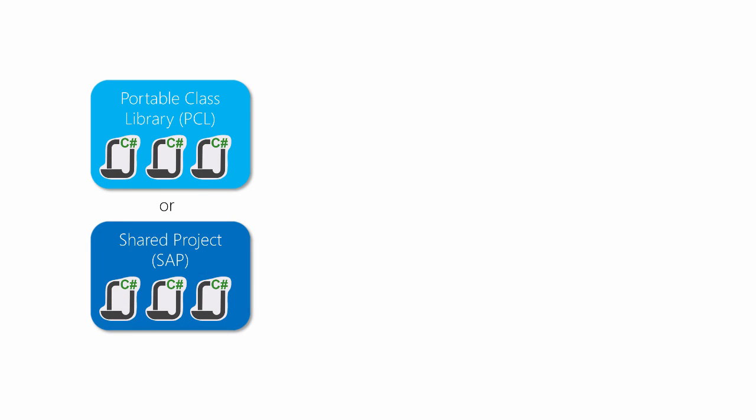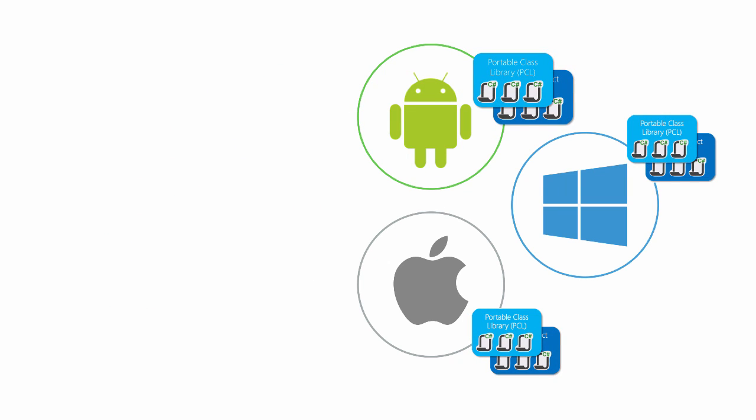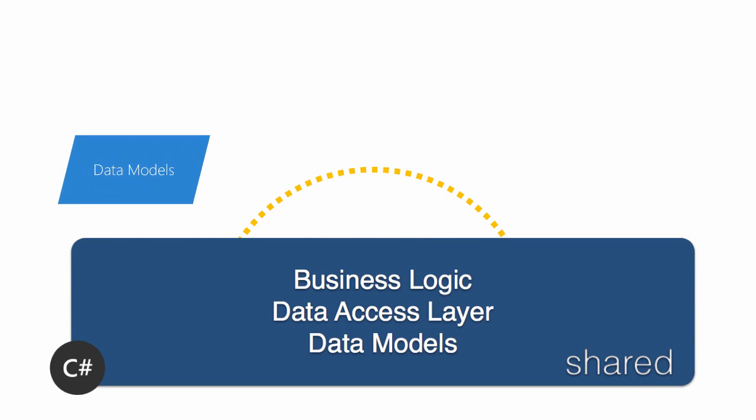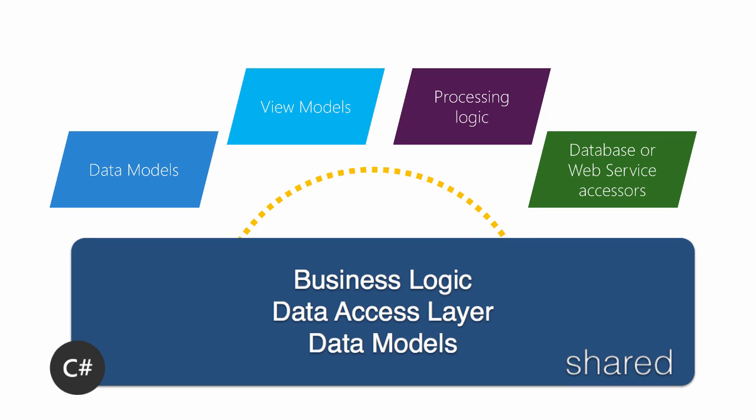In traditional Xamarin development, we share our business logic in the form of a portable class library, or a shared project, or perhaps a combination of the two. We then add references to these libraries with our common code to each of our supported platform-specific projects. That allows us to share all the things defined in these libraries with our Android, Windows Phone, and iOS projects. The code we share in this approach typically includes things such as view models, business logic, web service access code, and data structures — things we can cleanly define in C# using .NET APIs that are common to all three platforms.